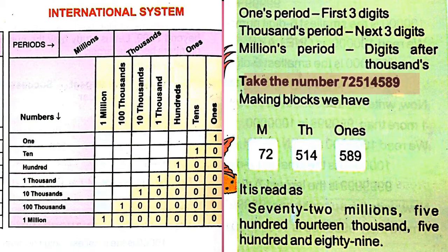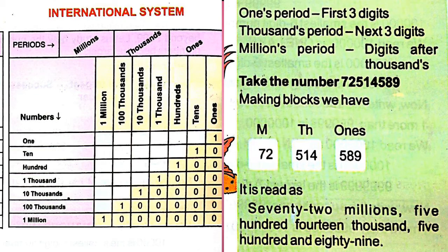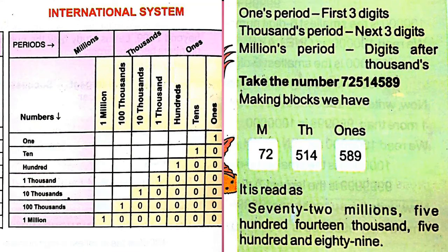Let us take the number 72,514,589. In the ones period there are three numbers: 5, 8, 9. In the thousands period: 5, 1, 4. In the millions period: 7, 2. So we read the number as seventy-two million, five hundred fourteen thousand, and five hundred eighty-nine.